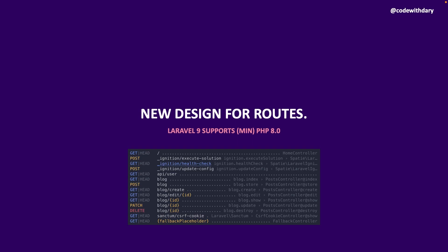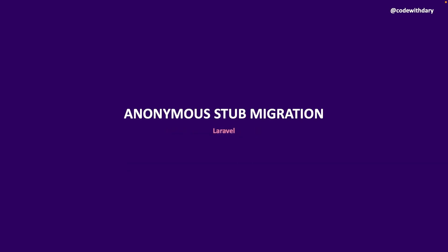If you had a lot of routes defined inside your application, it would have got pretty messy. Now you'll see a clear overview with the HTTP method, the endpoint, the named route, and the associated controller. Finally, Laravel supports anonymous stub migration. When you created multiple migrations with the same class name in Laravel 8 and tried to recreate your database, you would run into issues. Since Laravel 8.37, it allowed you to create anonymous class migration files, and since Laravel 9 it's been implemented as the default behavior.